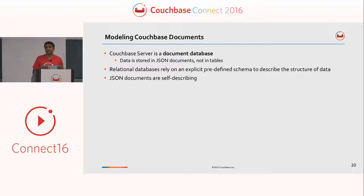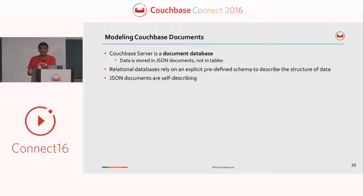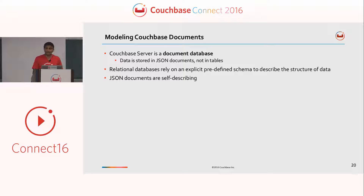Modeling Couchbase documents: Couchbase is a document database with a key-value approach — you have a key and a value. So you can model both the key and the data. The data itself can be a very simple string, or it could be an XML document, a JSON document, or anything you want — even an encrypted string. But usually when we're talking about Couchbase, it is geared to store JSON documents. Most of the tools built on Couchbase assume you're storing JSON. For example, N1QL works on JSON data — it assumes you are querying JSON data in Couchbase buckets.